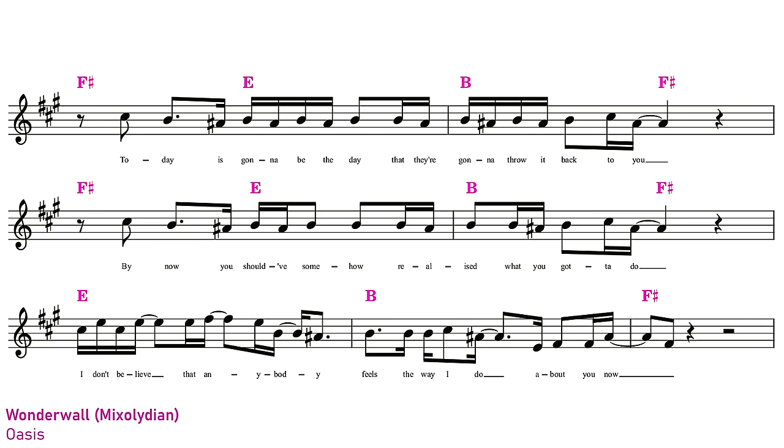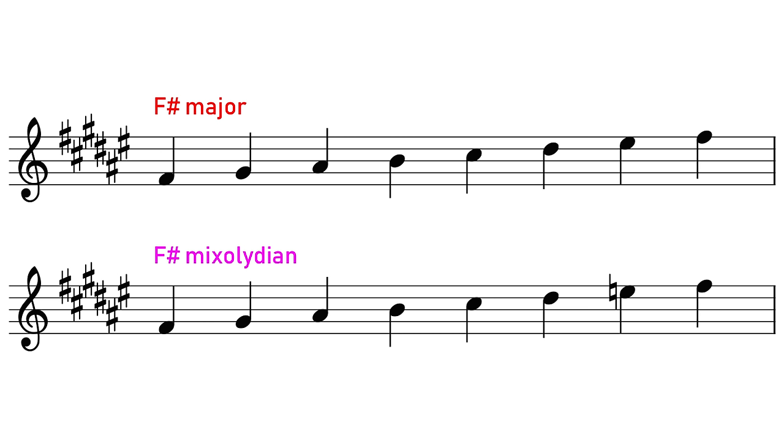As you can hear, Mixolydian is slightly darker than major. It doesn't have the darkness of a minor scale. We still have that major third, but the lowered seventh gives it a slightly cooler, more laid-back sound.